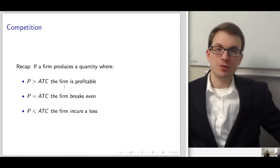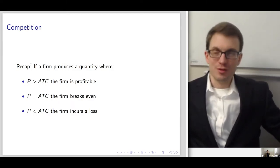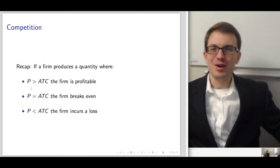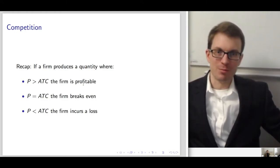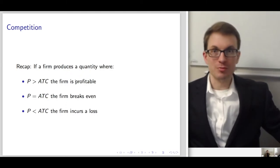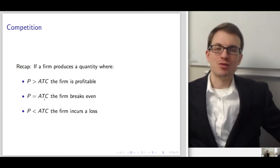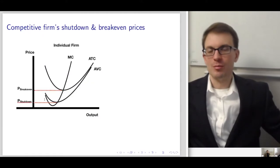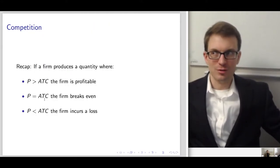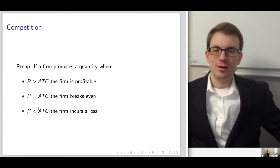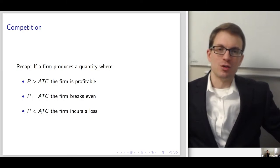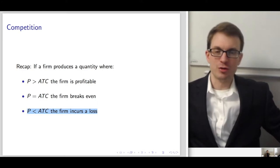If the firm produces where price is bigger than average total cost, the firm makes profits. If price equals average total cost, profits are zero — that's breaking even. If price is less than average total cost, the firm incurs a loss, since price minus average total cost is negative.